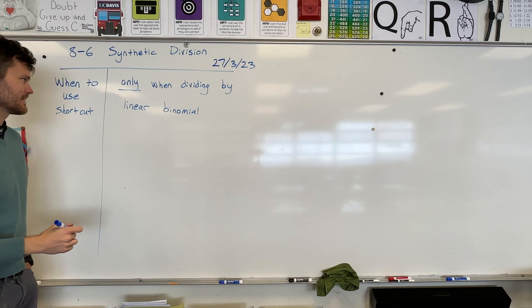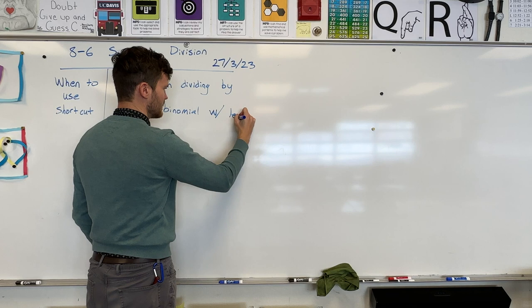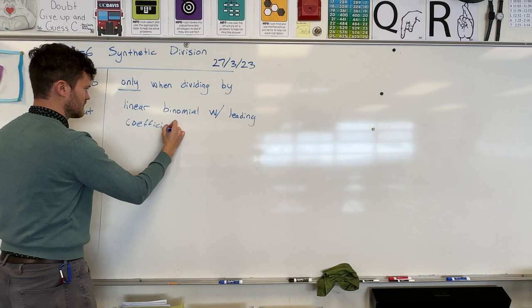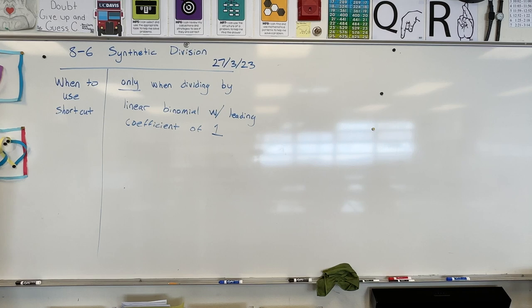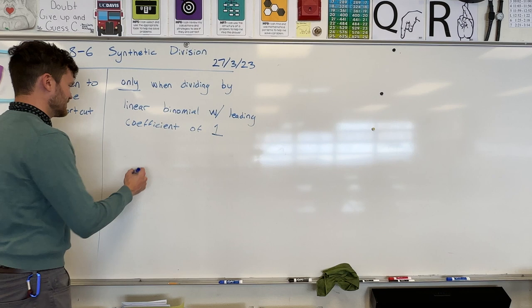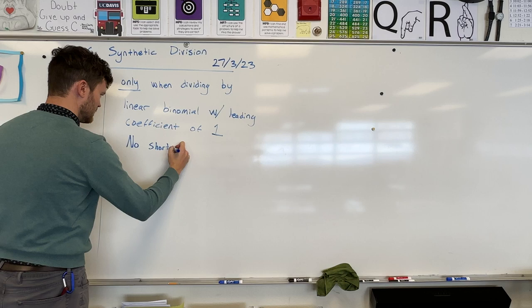With a linear binomial — that's a specific case — it must have a leading coefficient of 1. That is a mouthful, which is why I didn't really want to do that in words. So only when the linear binomial has a leading coefficient of 1. That would be a no shortcut otherwise.